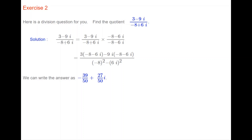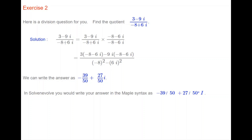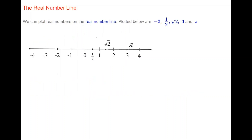The answer can be written as minus 39 over 50 plus 27 over 50 i. In Maple syntax, you would write your answer as minus 39 slash 50 plus 27 slash 50 asterisk capital I.